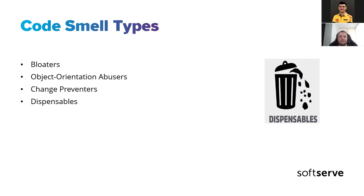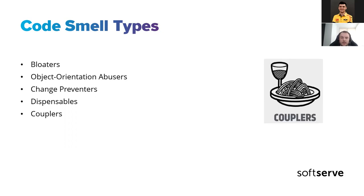The next type is Dispensables — unneeded or pointless code which, when removed, makes the code cleaner, more efficient, and easier to understand. The last type is Couplers — a code smell that represents high coupling between classes or entire modules.